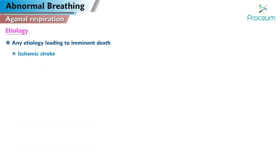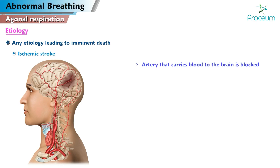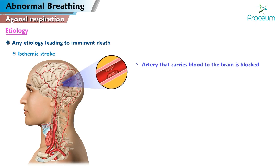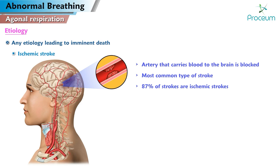Ischemic stroke. This type of stroke happens when an artery that carries blood to the brain is blocked. This is the most common type of stroke — about 87% of strokes are ischemic strokes.